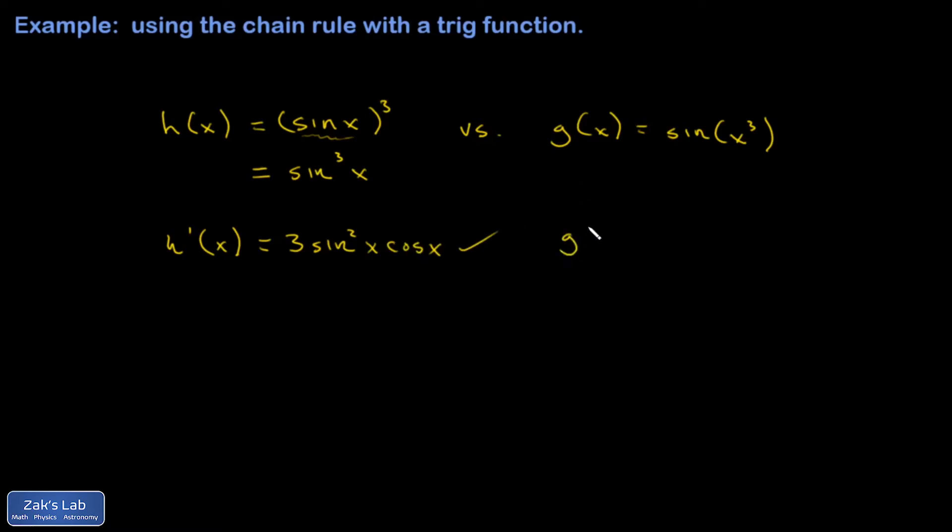And then g prime, the outer function is the sine function, and the inner function is x cubed. So I'm going to differentiate the sine function with respect to x cubed, as if x cubed is just a single thing. You can think of it like a y. And the derivative of sine y with respect to y is just cosine y. So we start out with cosine of x cubed.